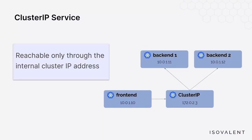Now, another thing to understand when we talk about services is that there are four types of services, and the type we choose will change how applications can reach the service. The default type is ClusterIP. In this case, the IP that we use to reach the service is part of the internal cluster network — the service is only reachable from inside the cluster, and that's why it's called ClusterIP. This is usually the right choice for services that are used by other services, like the backend pod in our previous example. The Kube Proxy instance running on each node will create rules that handle traffic to this IP and redirect it to one of the pods currently alive and providing that service, no matter on which node they are running.